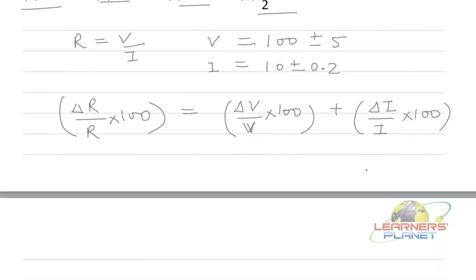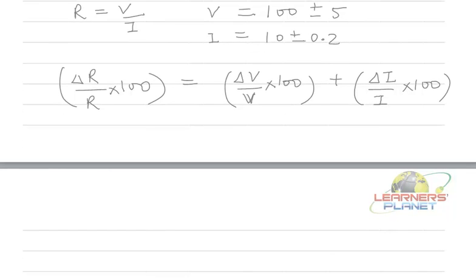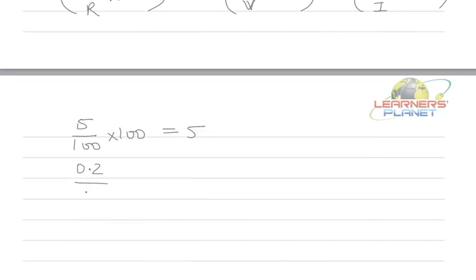Let's see what are these values. Delta V upon V is 5 upon 100 into 100. That is, it is 5%, and delta I upon I is 0.2 divided by 10 into 100.